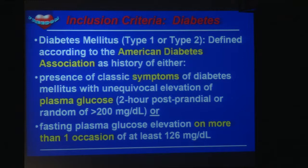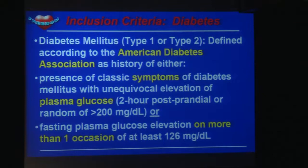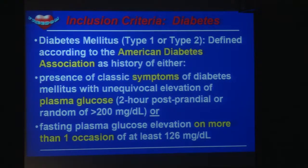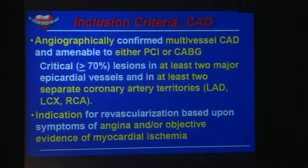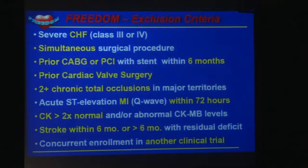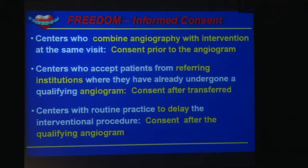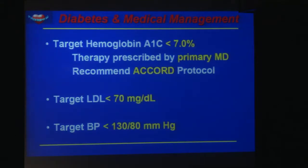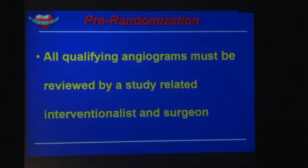Diabetes was defined following the American Diabetes Association criteria. Geographically, these were patients with multivessel coronary disease with severe lesions in at least two measured epicardial vessels. Indications for revascularization were myocardial ischemia or angina. The inclusion and exclusion criteria are shown here. Medical targets included hemoglobin A1C less than 7%, target LDL less than 70 mg/dL, and blood pressure less than 130/80. Pre-randomization, all qualifying angiograms were reviewed by both the interventionalist and the cardiac surgeon.